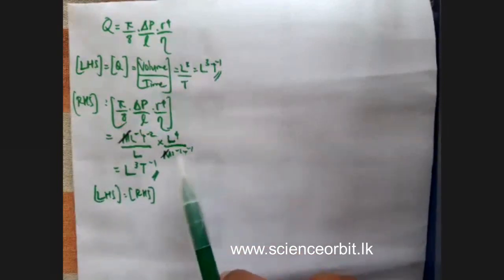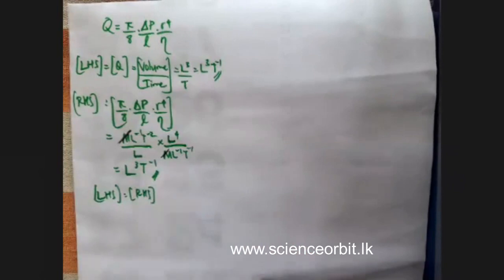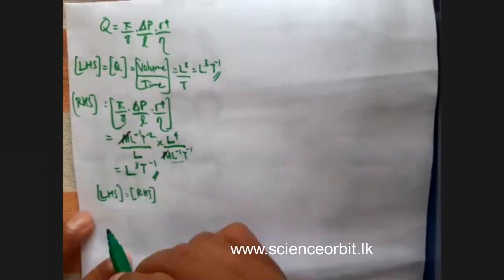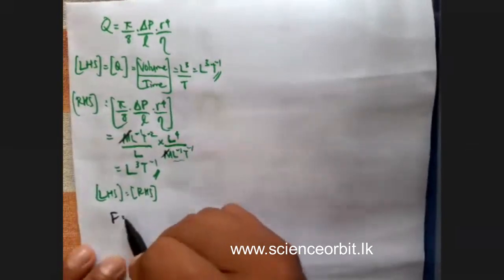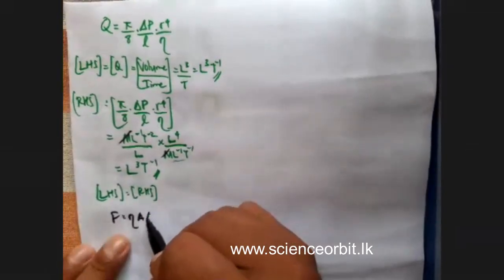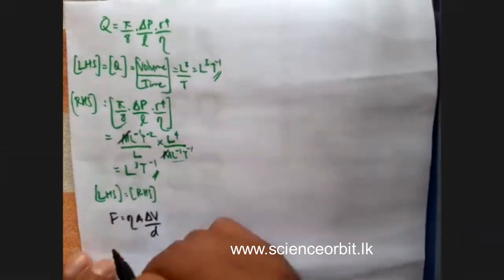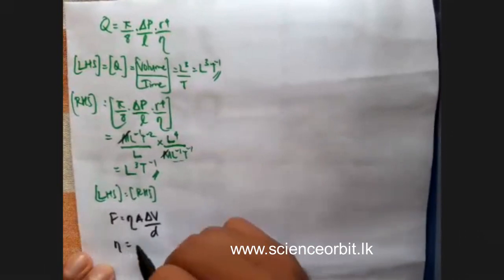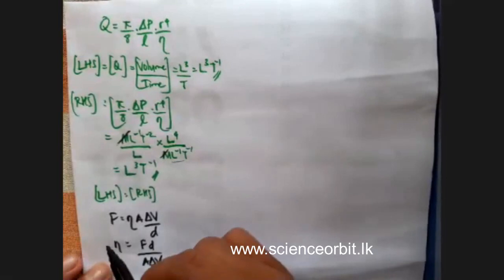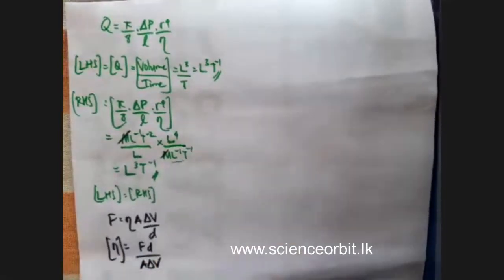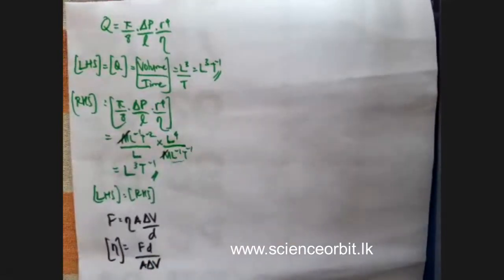If you are not sure about this, you will have to use the equation: F equals eta A delta V over D. Rearranging, eta equals F into D over A into delta V. It is dimensionally consistent. That is what you have to do — this is a basic thing they will normally ask.